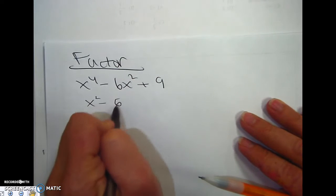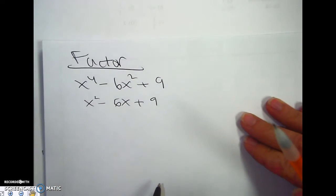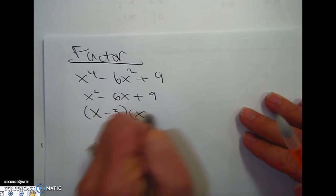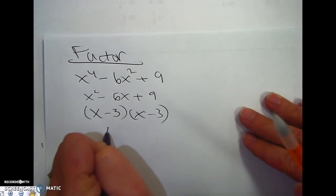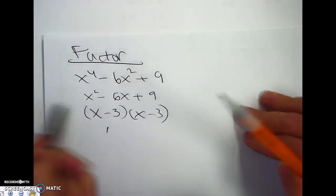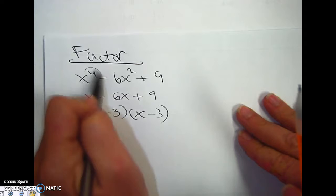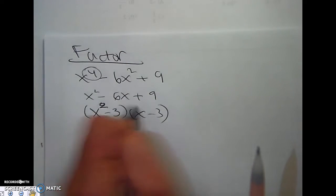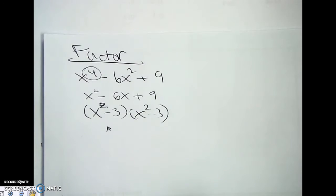This makes me think of x squared minus 6x plus 9, which is really x minus 3 times x minus 3. But the problem is you have to get it to x to the fourth. So it's really x squared minus 3, x squared minus 3.